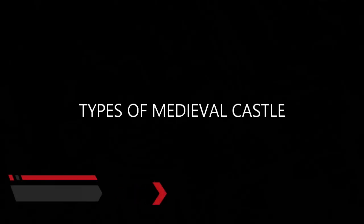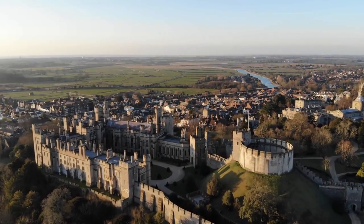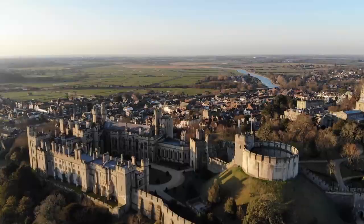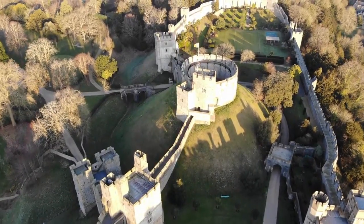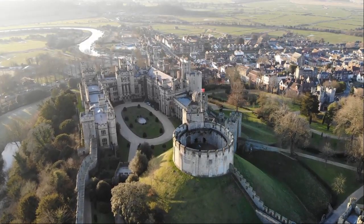Types of Medieval Castle. 1. Motte and Bailey — a castle consisting of a fortified keep on top of an elevated ground, connected to a bailey.